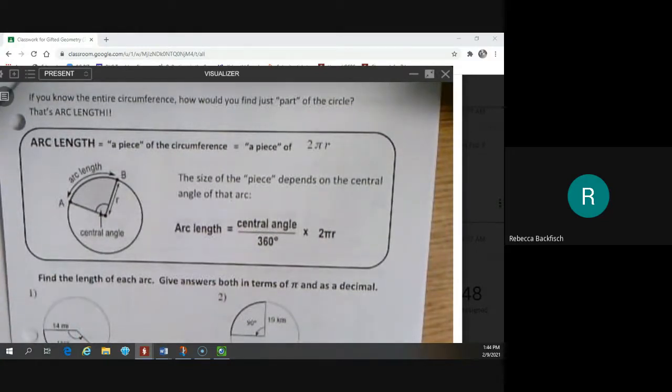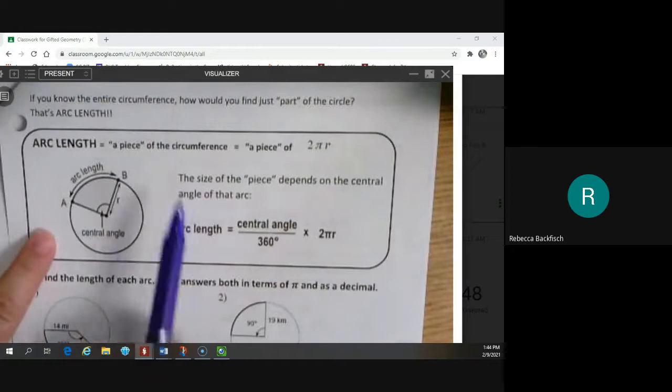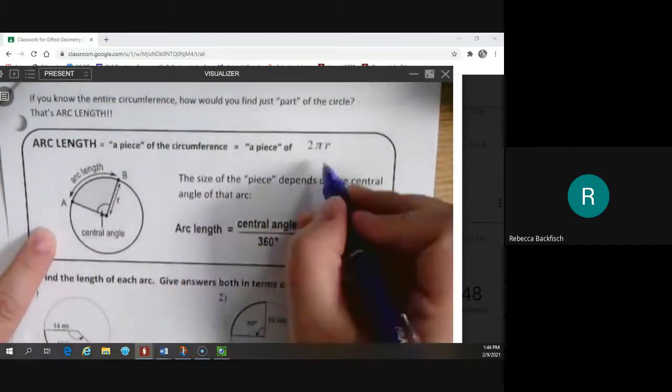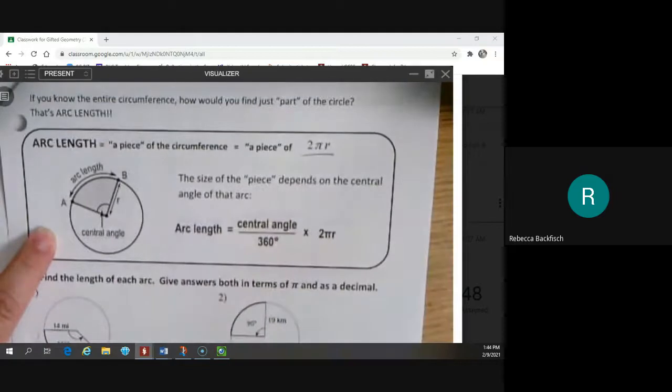Wake up. Head to page three and change pages. So we're looking at arc length now. It's a piece of the circumference, which means a piece of, this is the formula for circumference. So we're talking a piece of two pi r.